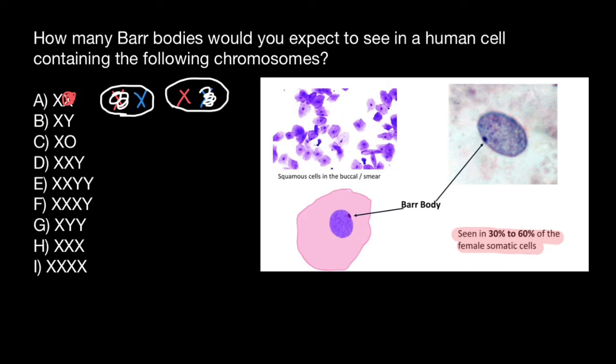Males do not form Barr bodies because they have only one X chromosome, which is always maternally inherited, and males receive the Y chromosome from the father's side. Because they have only one X chromosome, it is always active, and no Barr bodies would be seen in male somatic cells.